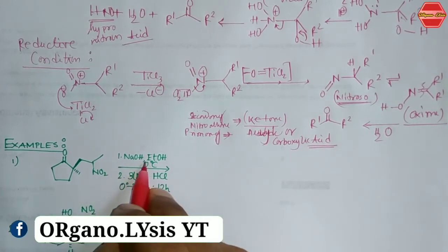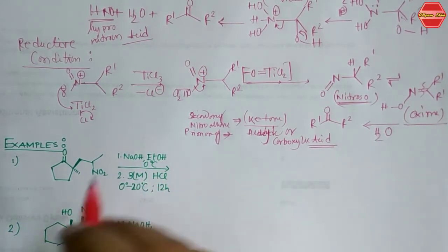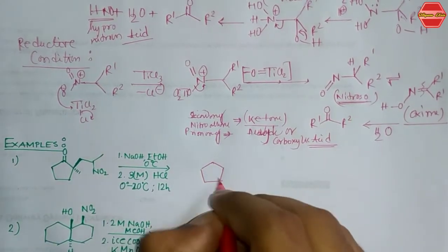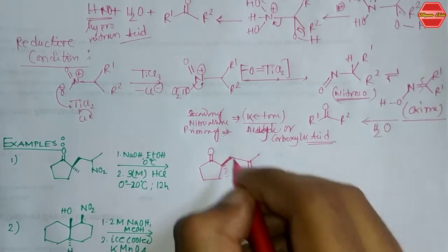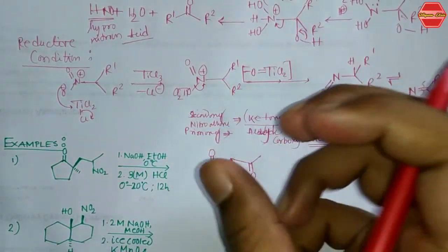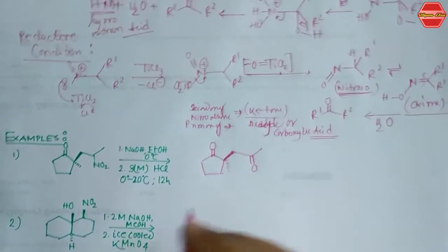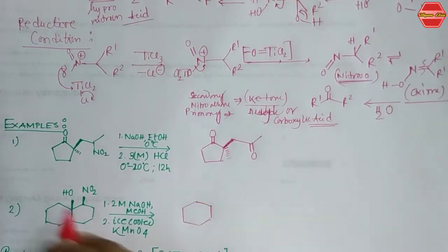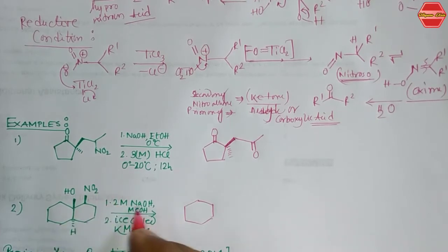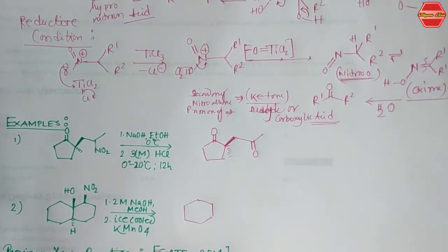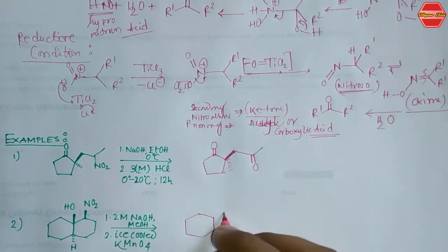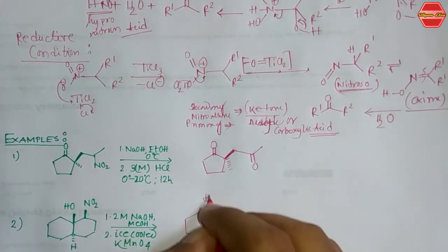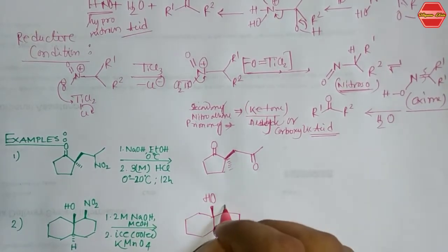You just need to identify the nitro group and change it to the corresponding ketone or aldehyde. In the next example, a nitro (NO₂) group is given with a base and ice-cold KMnO₄ as an oxidizing agent — this is the modification case where an oxidizing or reducing agent is used. Again, you get the ketone product.